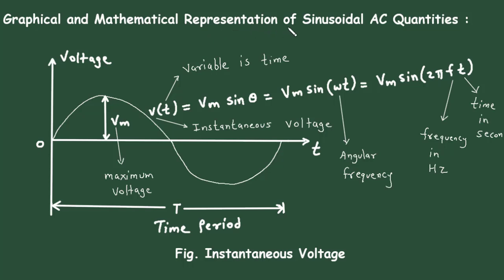Graphical and mathematical representation of sinusoidal AC quantities. Here we can see this is an instantaneous voltage waveform. This is called a waveform — it may be a sine wave or it may be a cosine wave, so it is called sinusoidal. Since it is starting from 0, that is why it is a sine wave.